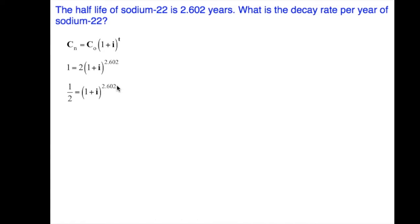Now to get rid of this 2.602, I am going to raise both sides to the power of 1 over 2.602. When this side gets raised to that power, you're going to cancel and make 1. Anything to the power of 1 is just itself, so we don't bother writing it.